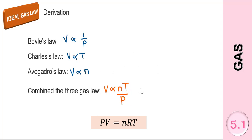From this combination, we will get an equation which is PV over nT is equal to constant, where the constant that we are going to use in this formula is the gas constant R, with a value of 0.08206 liter atmosphere per mole per kelvin.